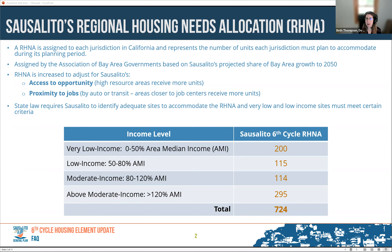Sausalito's RHNA is based on its share of Bay Area growth through 2050. It only addresses an eight-year period, but the overall growth rate is used to establish the baseline, then adjusted to address access to opportunity and proximity to jobs. The city has been assigned a total of 724 units, including 315 very low and low-income units, 114 moderate-income units, and 295 above moderate-income units. The city's website has a link to the Housing Element Update website with a table identifying all income levels, affordable housing prices, and affordable rents.